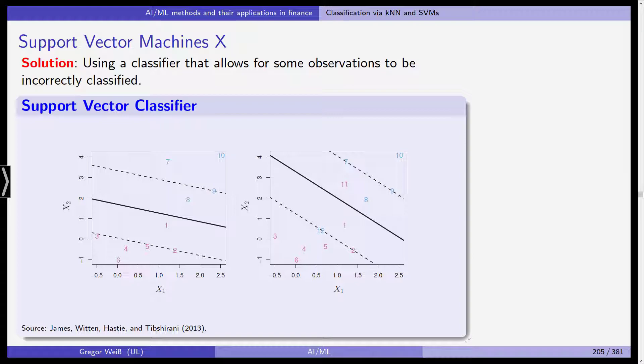It's not yet the support vector machines that we want to talk about in this section, but it's the support vector classifier which is also usually summarized under this name support vector machines. So the solution is we use a classifier that allows for some observations, not all of course, but for some observations to be incorrectly specified and classified.